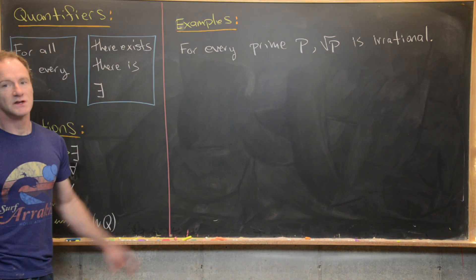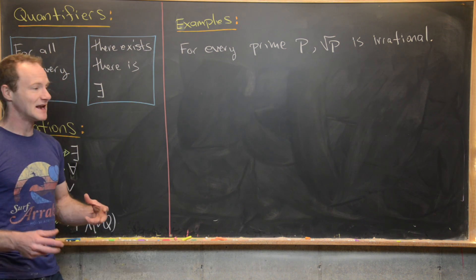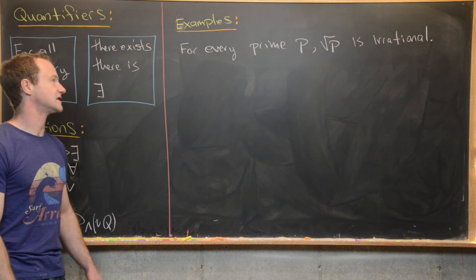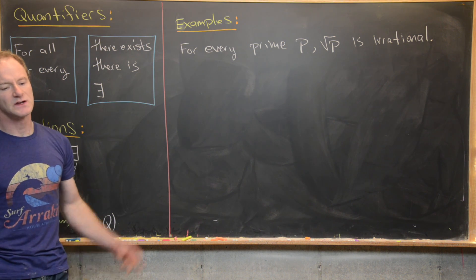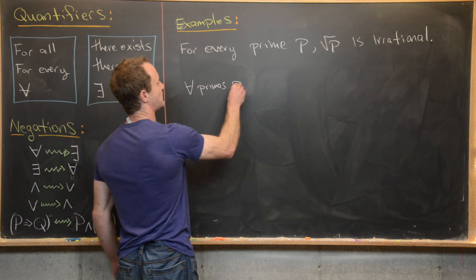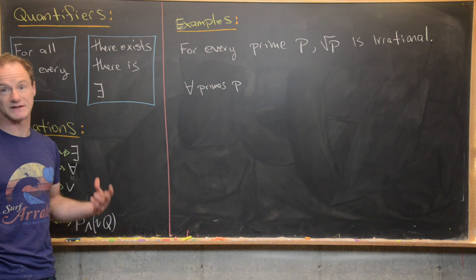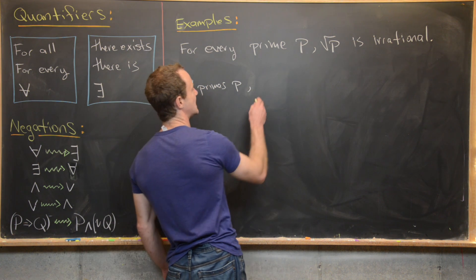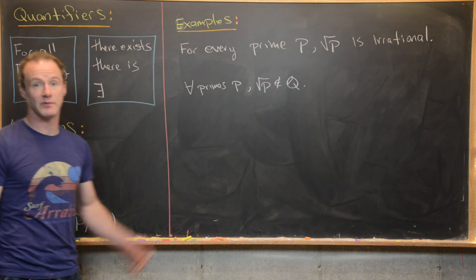Now I want to run through some examples. What we'll do is start with a sentence, turn it into symbolic logic, negate it via symbolic logic, and then turn it back into an English sentence. We'll start with this sentence: 'For every prime p, the square root of p is irrational.' This is a true statement. So we write it as: for all primes p, the square root of p is not an element of the rationals.